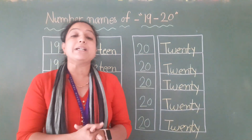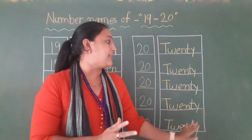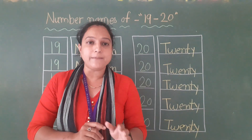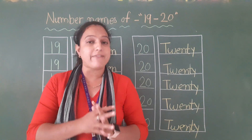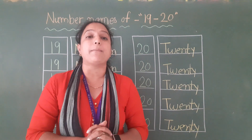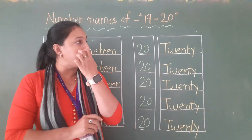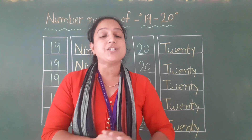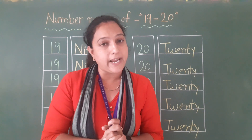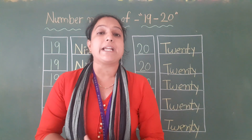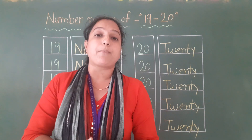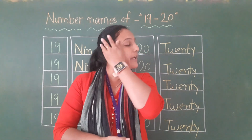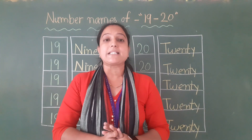Vaapas se main saare 1 se lekar 20 tak ke aapko phir se bolke bataati hoon. Don't worry. 1 se 10 aur 11 to 20 vaapas se main repeat karwaaungi, revision karwaaungi number names ka. Iske baad hum revision karenge 1 to 10 aur 11 to 20 ke spelling. Main yahan pe board pe likhaaungi. So, aapan start karte hain 1 ke spelling se.